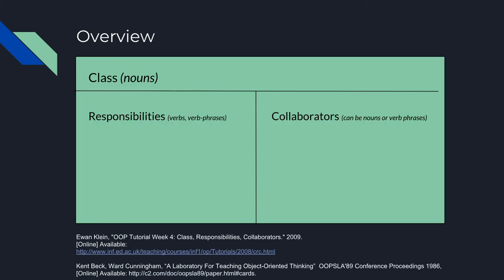Basically, a CRC card is just that — a card — and typically a plain old index card is used. It's important to note that the naming conventions of the card are important because they identify objects that will translate to the finished system. So the naming convention needs to be internally consistent and evocative in the context of the larger design environment.